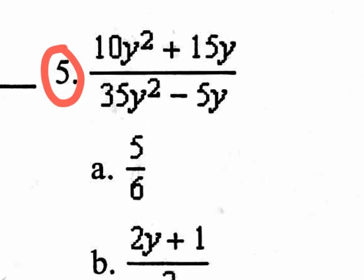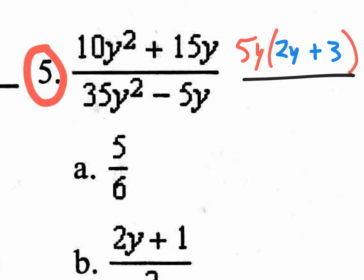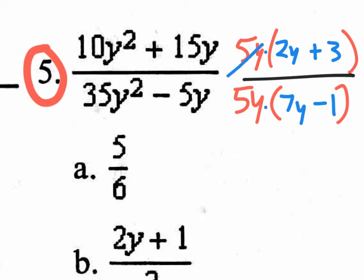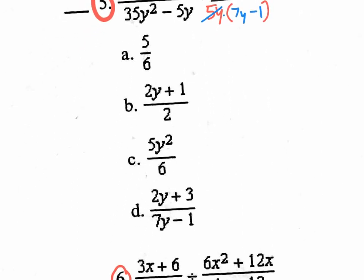Here's another one where you simply factor and cancel — number 5 from the quiz. Up on top, factor out the GCF. What's in common in both? There's a 5 and a Y in both, so you pull out a 5Y, leaving 2Y + 3 on the inside. On the bottom, the GCF is also 5Y, so pull out a 5Y, leaving 7Y − 1 on the inside. Now that you have 5Y times a binomial on both top and bottom, you can cancel the 5Y with the 5Y. So the final answer is (2Y + 3) / (7Y − 1), which is option D.